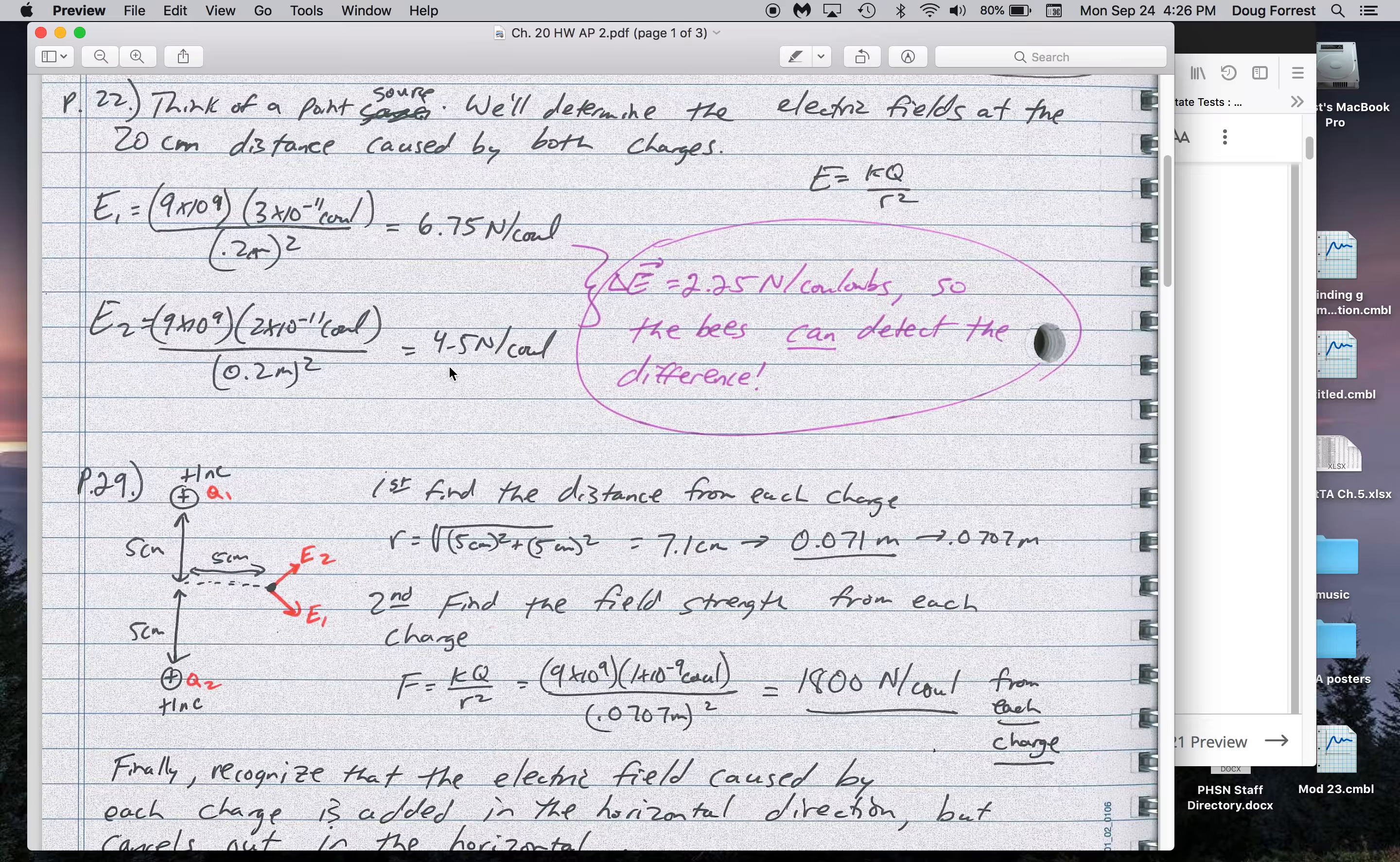Pardon me, maybe that had been pollinated, I guess, and the other one was down here. That's a difference of 2.25 Newtons per Coulomb that is greater than the sensitivity of the bees. So they could detect which one had been recently pollinated.